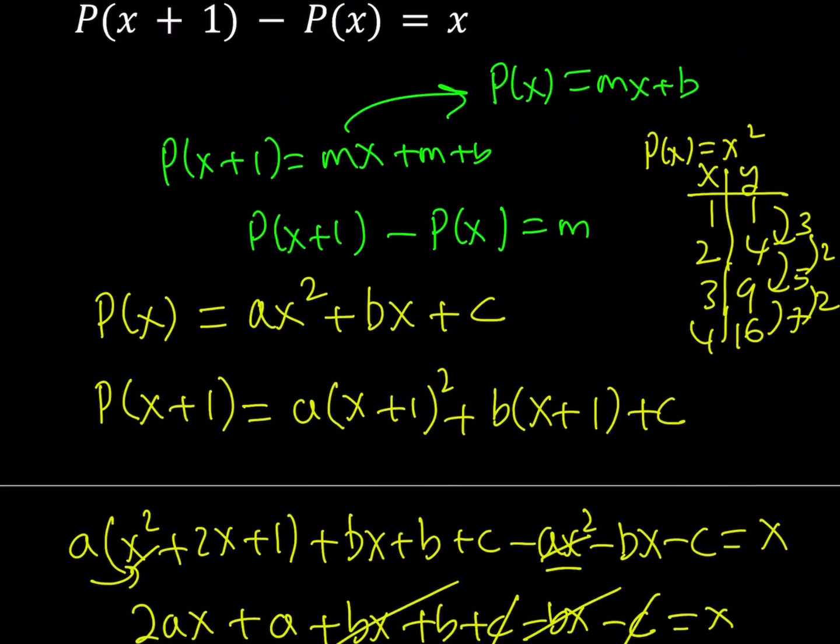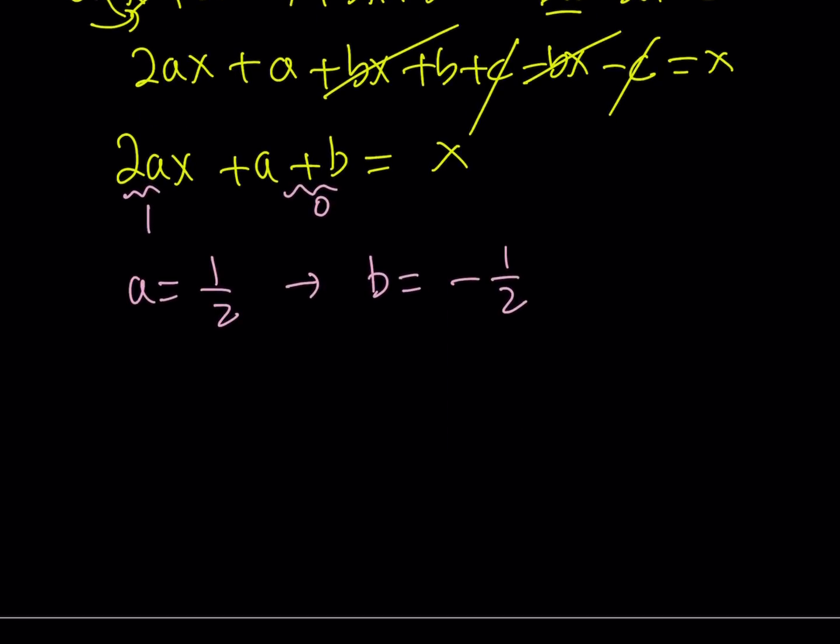So let's go ahead and write this down. So P of X can be written as AX squared, remember, plus BX plus C. And we didn't really get anything for C. So C can be anything. That's going to give me 1 half X squared minus 1 half X plus C. Now, this should be the general solution.